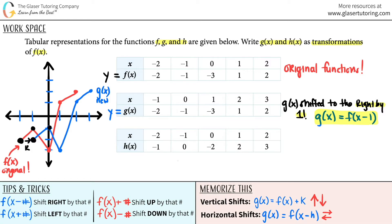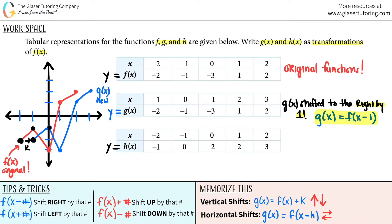Let's try the h of x one. Remember, this is just a fancy way of saying y. Let's plot these five points and see what happened to the original. So: negative 2, 1 — over here; negative 1, 0; zero, negative 2; 1 and 2; and then 2 comma 3. So let's plot those — this is coming all the way down here, going all the way up here and then over here.